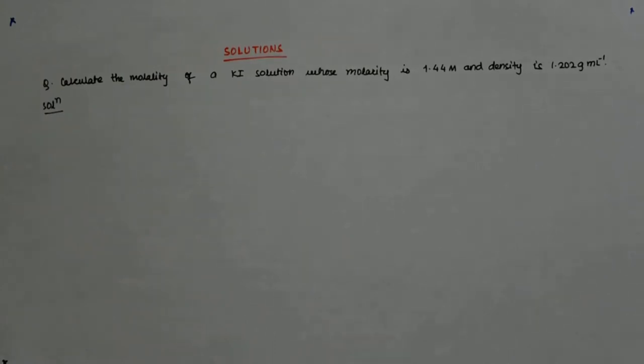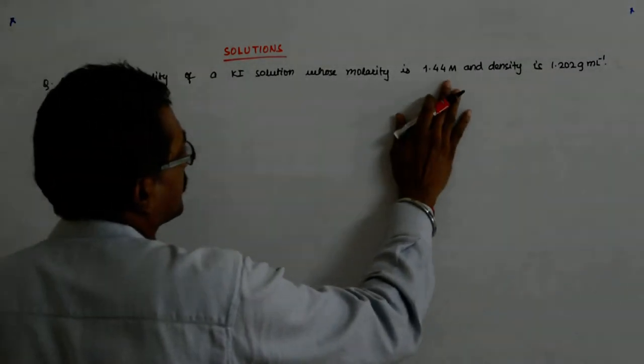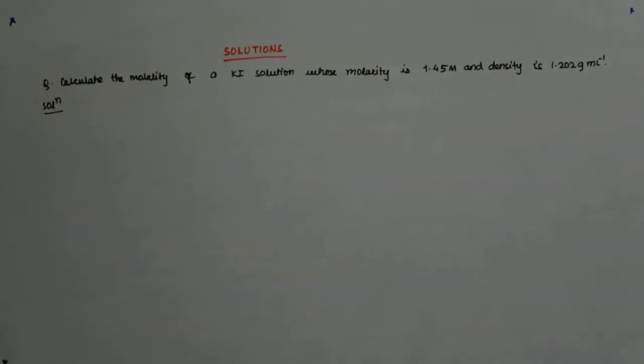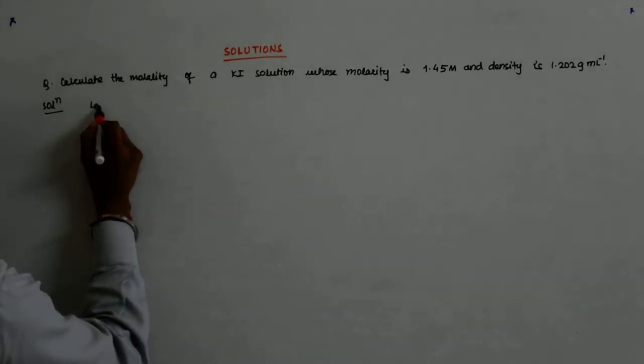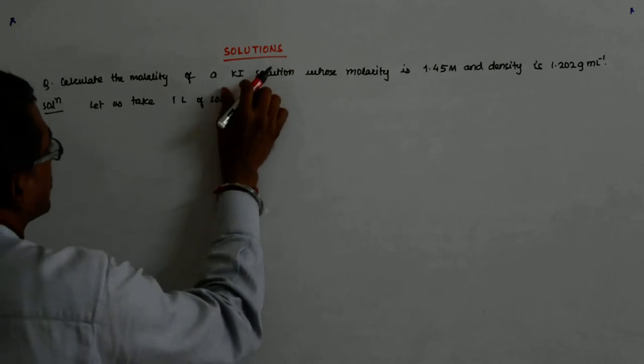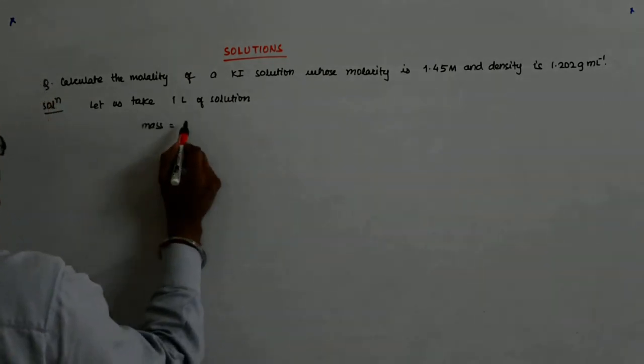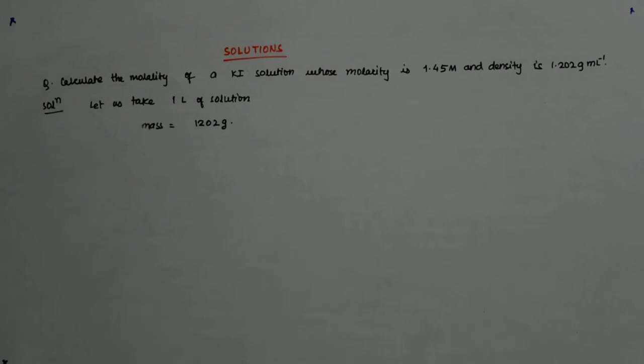Now let us try to solve this question, where we are given that the molarity of the solution is 1.45M and density is 1.202 gram per ml. So what is given is molarity, I have to convert it into molality. So let us take 1 liter of solution, so what is the mass of that?